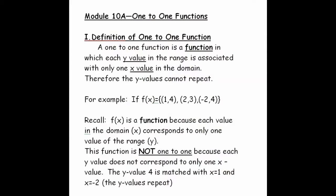It's very important to understand: to be a function, all the x values must be different. To be a one-to-one function, not only do the x values have to be different, but all the y values must also be different. In this example, y value four repeats, so this is not a one-to-one function. It is a function because the x values are different, but it's not one-to-one.